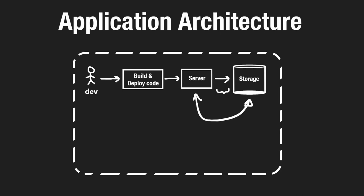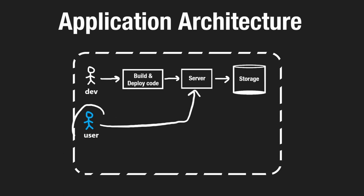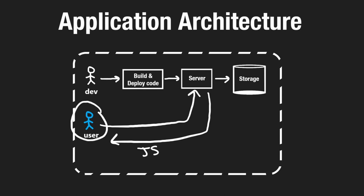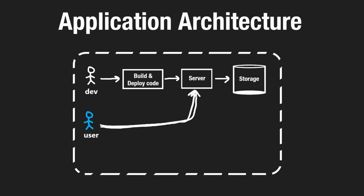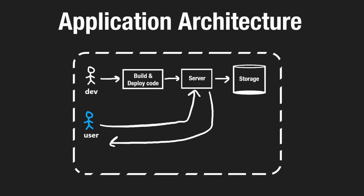From a user's perspective, they communicate with our server by sending a request, most likely from their browser. If we serve front-end code, the server responds with the JavaScript and HTML the user needs. Our server could also be a back-end API that responds with data — maybe in JSON format. But what if many users make requests simultaneously and our single server can't handle them all?